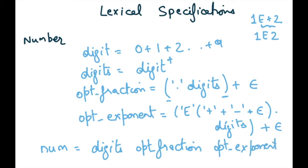Finally, a number is: digits (one or more digit), followed by an optional fractional part, followed by an optional exponent. This represents a regular language used by common programming languages to represent an arbitrary number, including decimals and the exponent operator E.